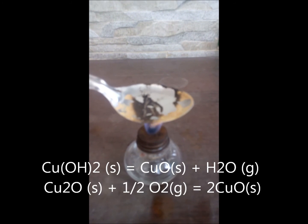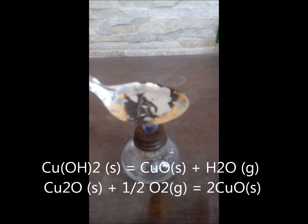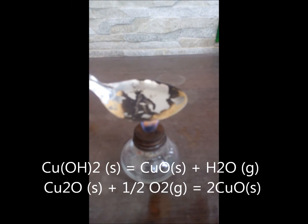You can see the cuprous and cupric compounds turning black. That is to copper oxide.